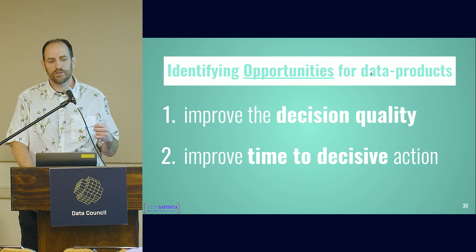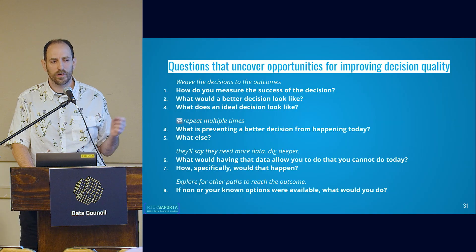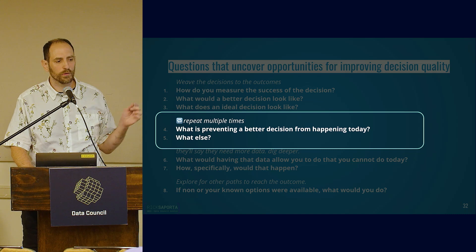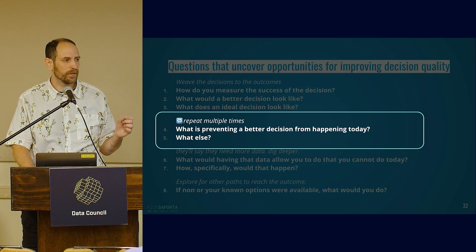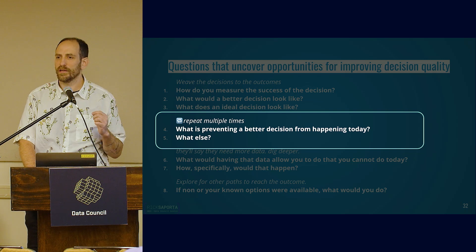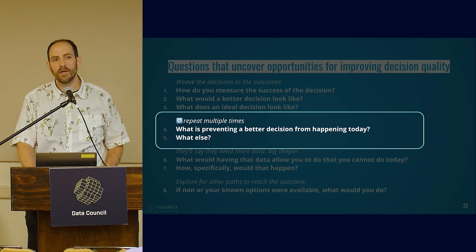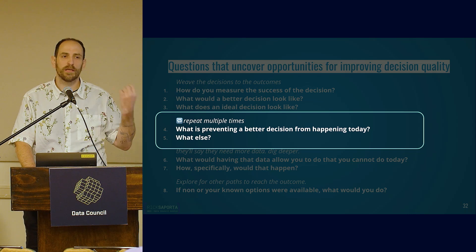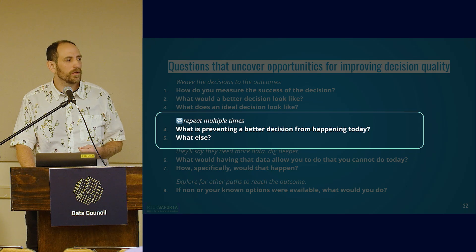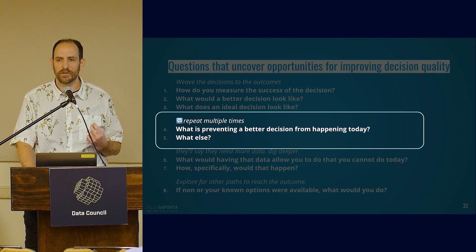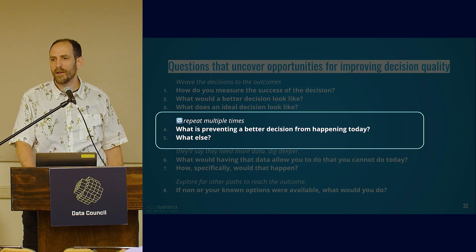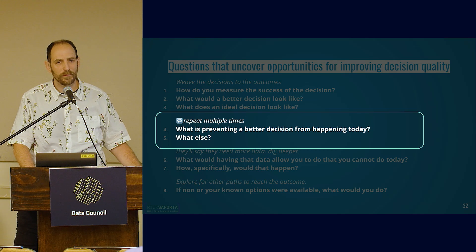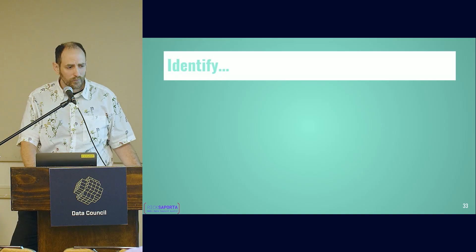We talked about improving decision quality and improving time to decisions. The one question I really want to focus everyone on is this core question: what is preventing a better decision from happening today? When you ask that question, you'll get an answer — ask anyone making a decision, they'll give you a really simple answer. Then follow up with 'great, what else?' Keep asking — maybe twelve or thirteen times until they say that's it. Write it all up on a board, ask 'anything else?' and just sit there quietly. Usually it's that last thing they come up with which is the most important. That's where you identify the opportunities.